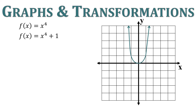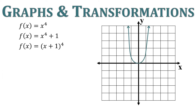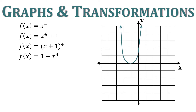What happens if we add 1 to the outside? It moves it up 1. What if we add 1 to the inside? It moves it left 1. Lastly, what if we say 1 minus x to the fourth? That flips it down because the x is negative, but our 1 is positive, so it moves it up.